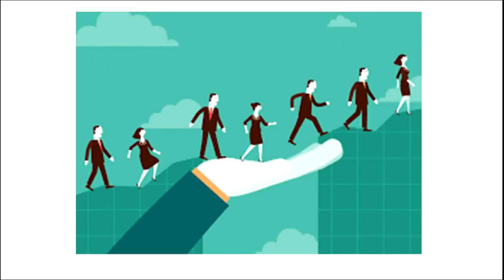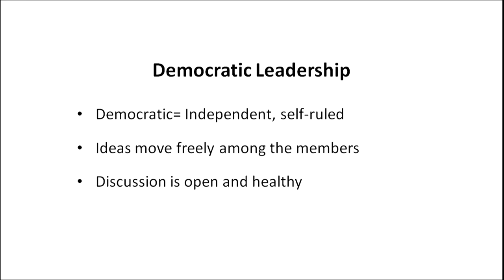Moving on to the next leadership style — look at the picture showing a line of people in similar dress treading a path. The broken point is joined by a palm acting as a bridge so people can cover the path without breaking their journey. This type of leadership is known as democratic leadership style. Democracy means independent and self-ruled, where ideas move freely among members. There is open and healthy discussion, communication is continuous, and members are always ready to face any type of situation.